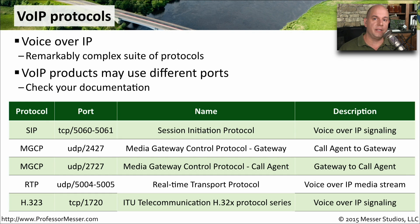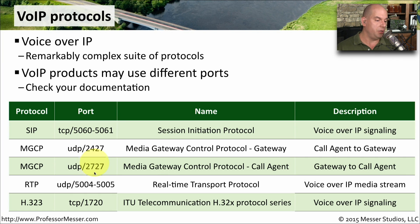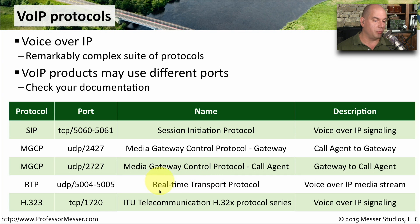Voice over IP communication involves many different ports and protocols. The Session Initiation Protocol, or SIP, uses TCP ports 5060 and 5061 to set up signaling between two Voice over IP devices. There are two media gateway control protocols: from the call agent to the gateway, MGCP uses UDP port 2427; from the gateway to the call agent, it uses UDP port 2727. For real-time communication, the Real-Time Transport Protocol — RTP — uses UDP ports 5004 and 5005 to send digitized voice information across the network.